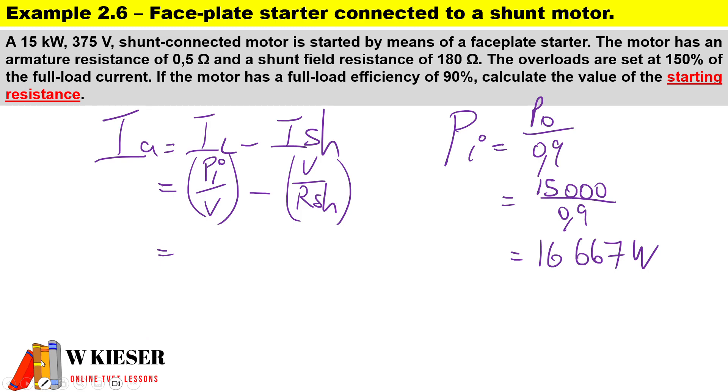So let's have a look here. We substitute everything. The input power of 16,667 watts divided by the voltage of 375, minus the shunt current. The terminal voltage is going to be 375 divided by the shunt resistance, and the shunt resistance is 180 ohms.